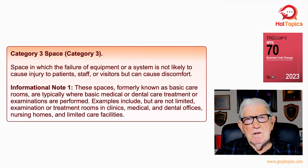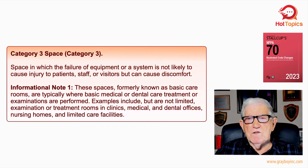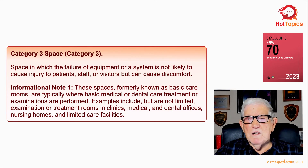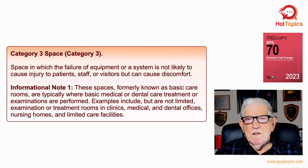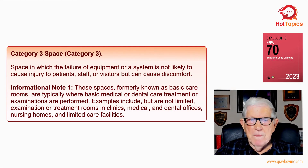Category 3 space: these are spaces in which the failure of equipment or system is not likely to cause injury to patients, staff, or visitors, but can cause discomfort. These spaces, formerly known as basic care rooms, are typically for basic medical or dental care, treatment, examinations, and so forth. Examples include — but are not limited to — examination or treatment rooms in clinics, medical and dental offices, nursing offices where nursing takes place, and limited care facilities.